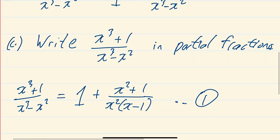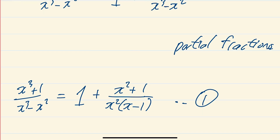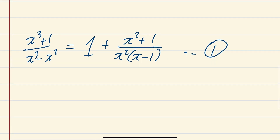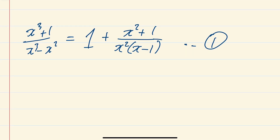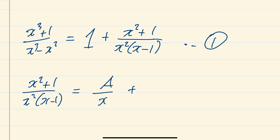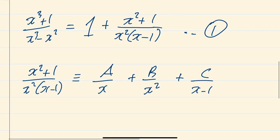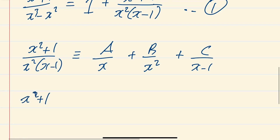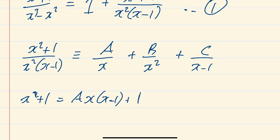Now we just investigate the fractional part: (x²+1) over x²(x−1). This is going to be A/x + B/x² + C/(x−1). Multiplying through by x²(x−1), the right-hand side becomes: A·x·(x−1) + B·(x−1) + C·x².